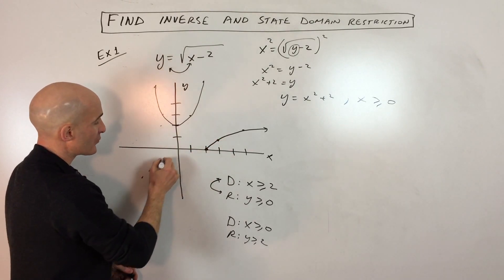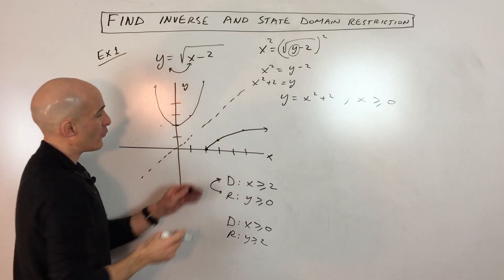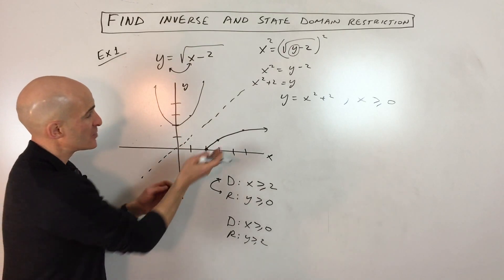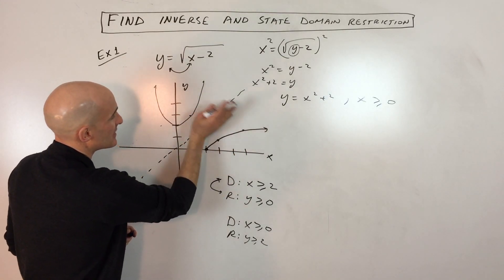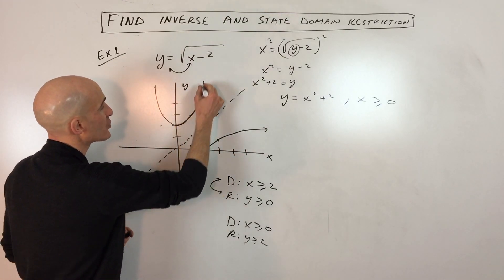But notice, when you find the inverse of a graph, you're looking at the reflection of the graph over the line y equals x. But you can see we're only interested in this piece that's being reflected over. So we just want this portion right here.